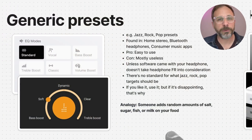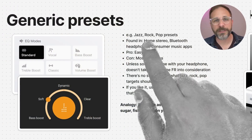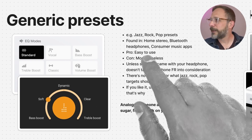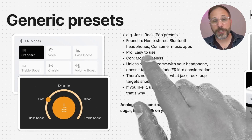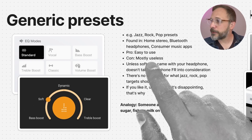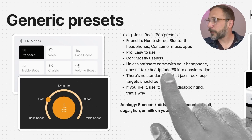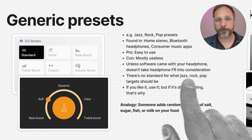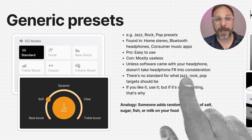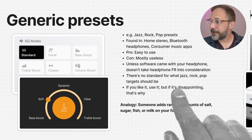Next I want to give an overview of the different types of EQ. EQ doesn't mean just one thing — there are different ways to do EQ, and they all have different pros and cons. Let's start with generic EQ presets. This is the most common version of EQ, but also probably the least useful. You've probably seen it in the form of jazz, rock, and pop presets in your favorite music app. The pro is that they're easy to use — you just select it and it changes the sound. The con is that the EQ is not tuned for your headphone, not tuned for any particular target frequency response, and not going to have any of your own personal preference baked into it. So generally these things are not very useful.